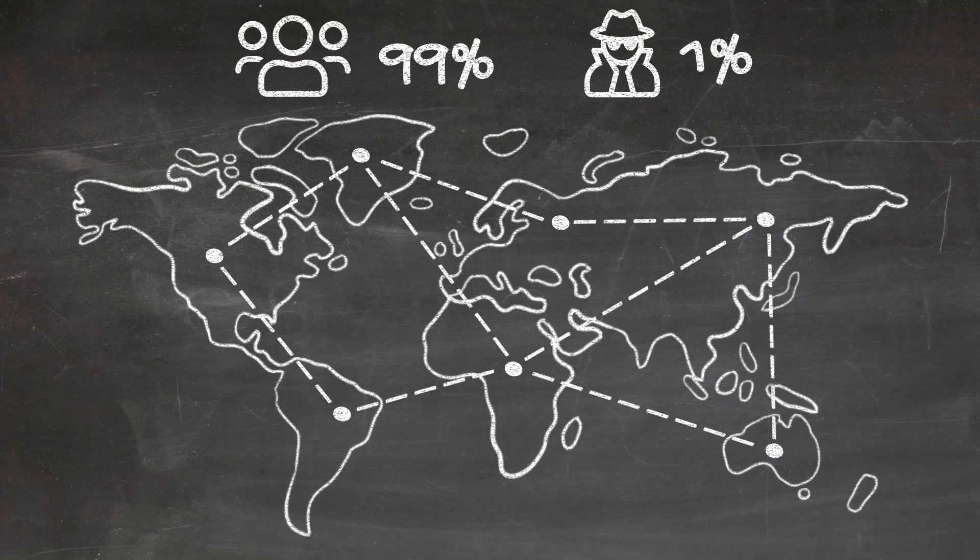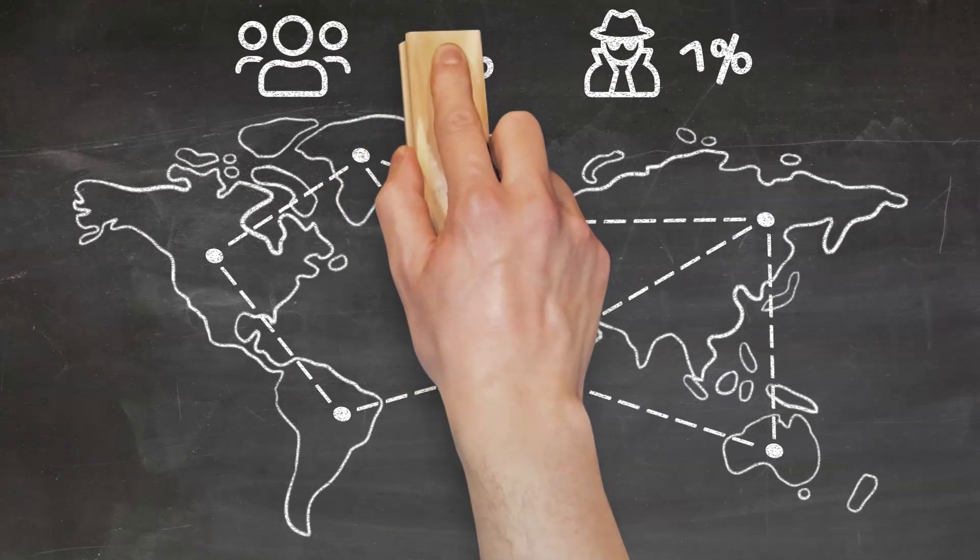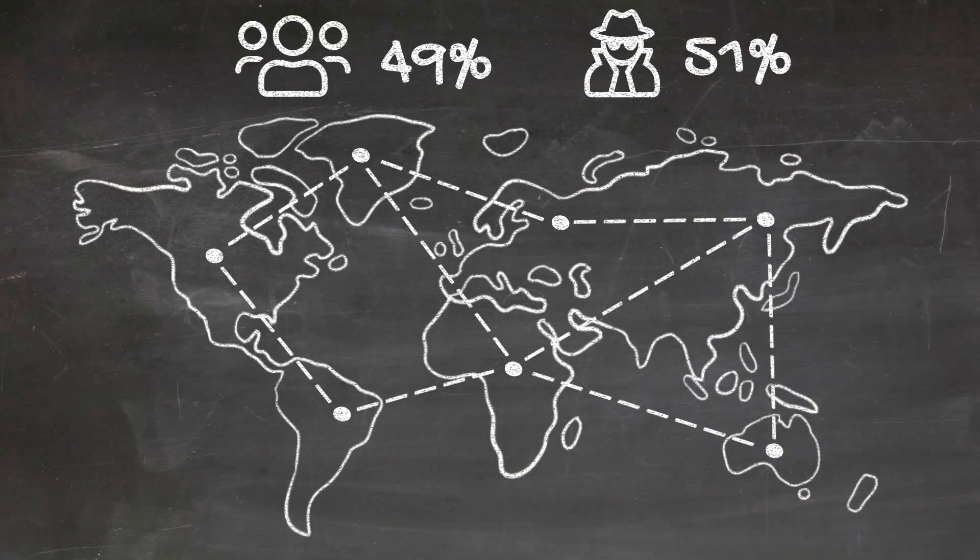What constitutes a 51% attack is simply that a person or a group of people somehow gets the majority of the resources on the network.